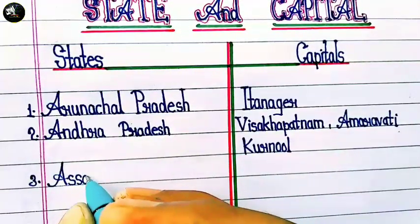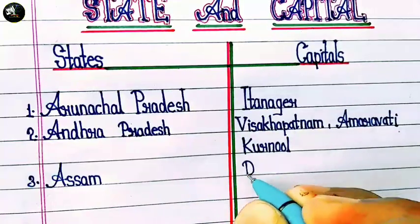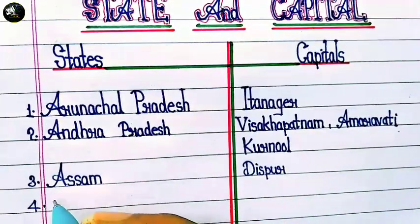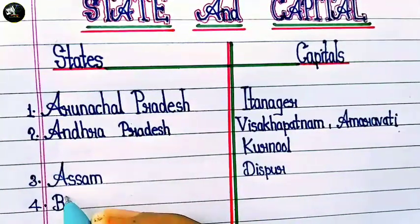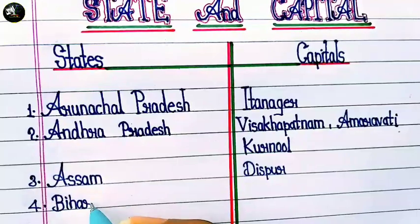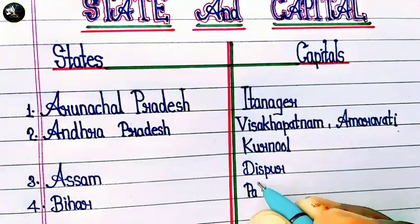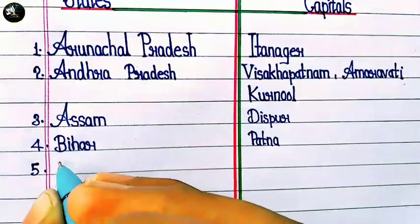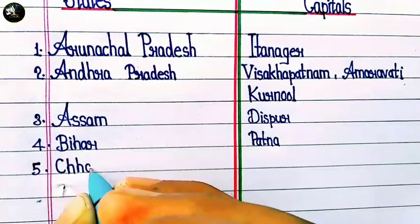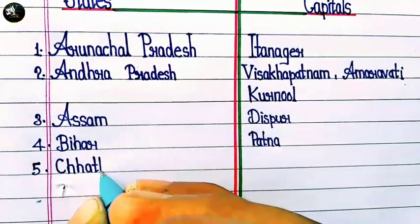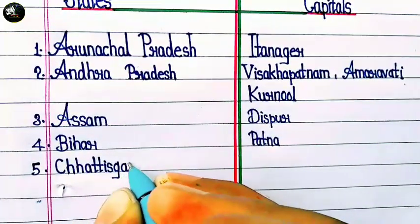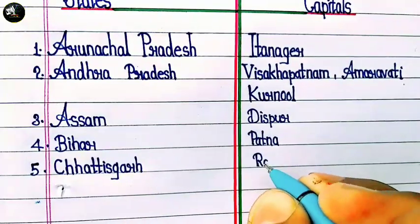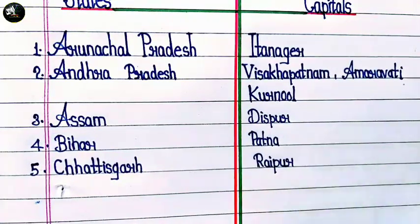And then Assam, and their capital is Dispur. Next is Bihar and the capital is Patna. Next is Chhattisgarh and their capital is Raipur.